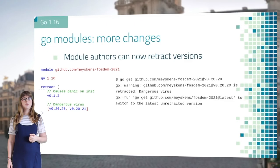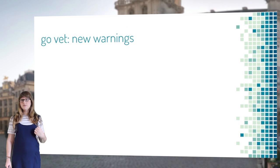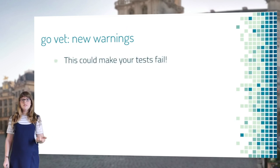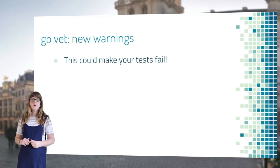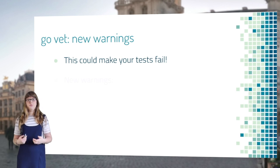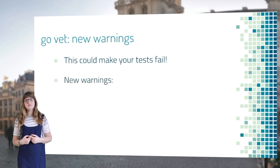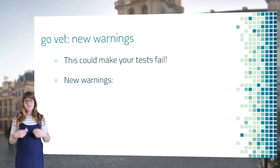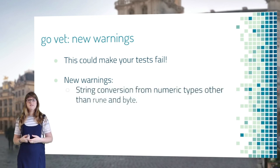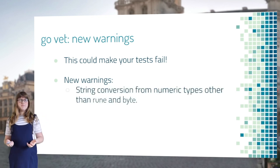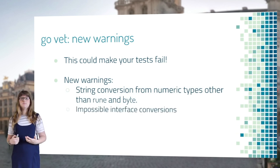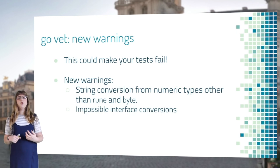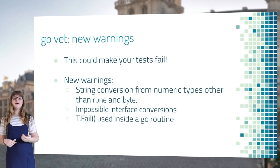Next up is GoVet. Why are these changes important? Well, this could make your tests fail, as GoVet is run on Go test — so updating to a new version could just make your tests fail. Here are a few new warnings which GoVet will now give us: it will warn us against string conversions from numeric types, warn us for impossible interface conversions, and warn you when t.FailNow is used inside a goroutine.